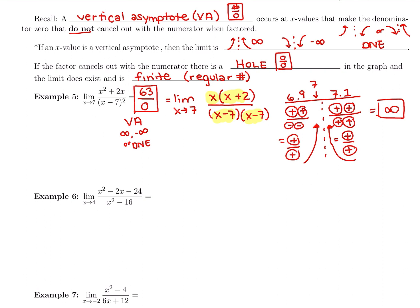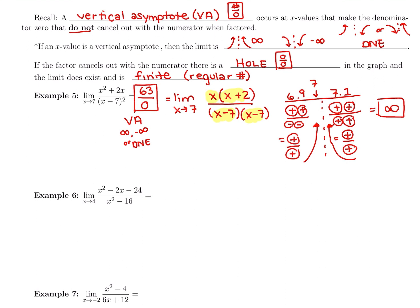Looking at another example: first step, plug in; then factor; then make a table if needed. I'll plug in 4: 4 squared minus 2 times 4 minus 24 gives negative 16 in the top — that's fine. But 4 squared minus 16 is 0 in the denominator, so bummer — we have another number divided by 0. This is going to be a vertical asymptote. I'll still factor to make the table easier.